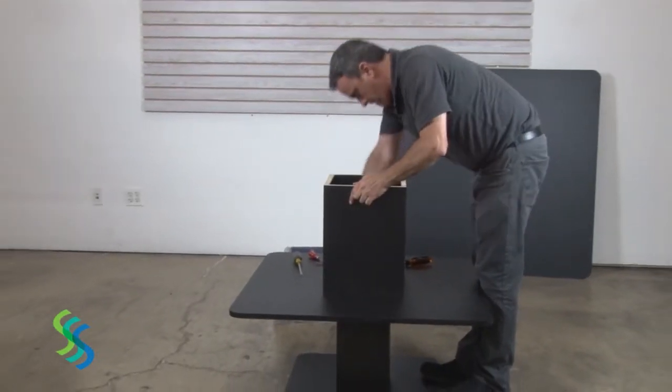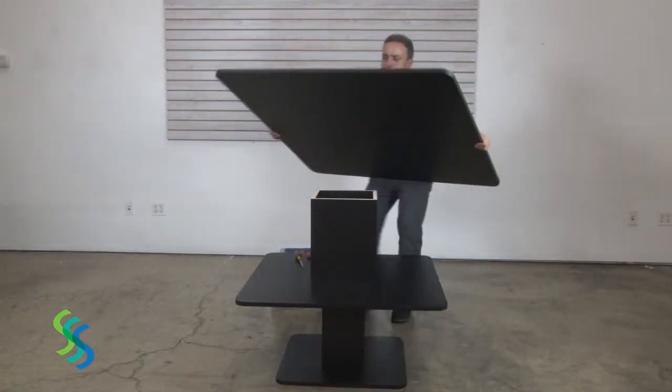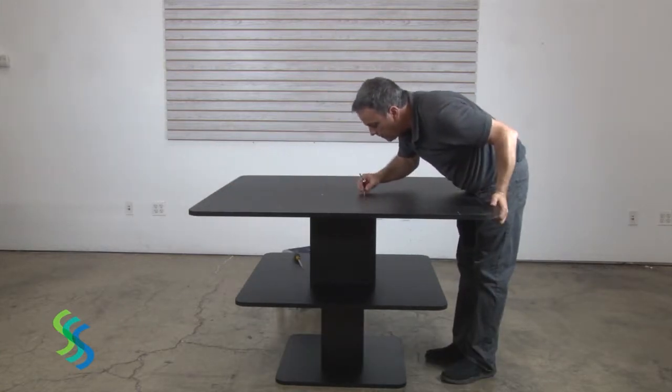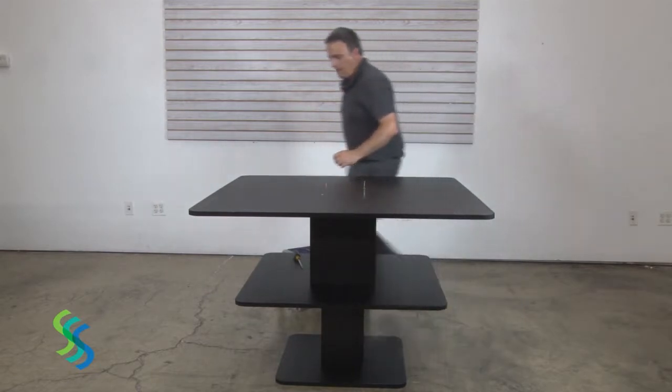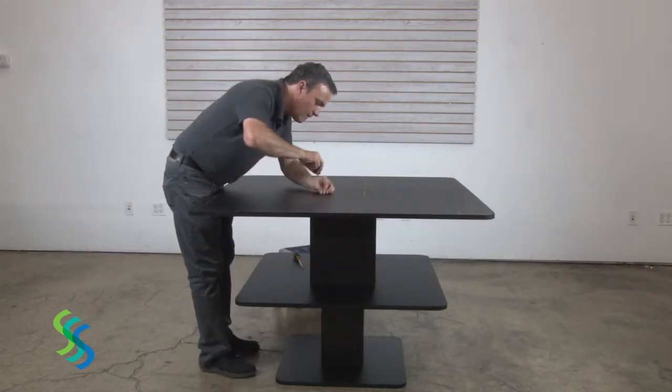Again, secure this stand to the middle tier using cam locks. Lift the lowest and widest tier onto the assembly. Secure it to the middle tier using four screws and insert eight cam lock screws onto the bottom of this tier in order to secure the bottom stand.